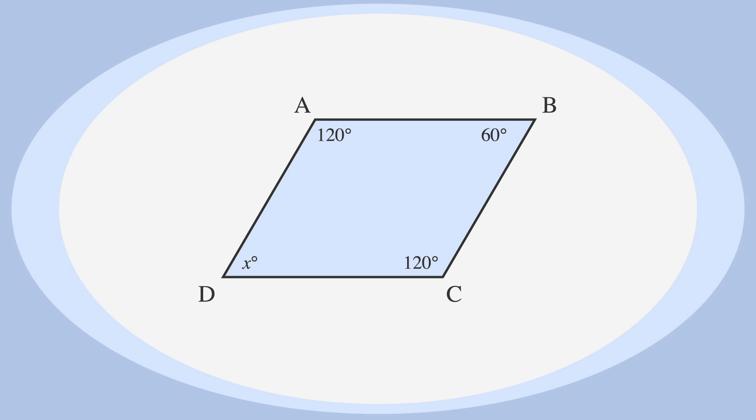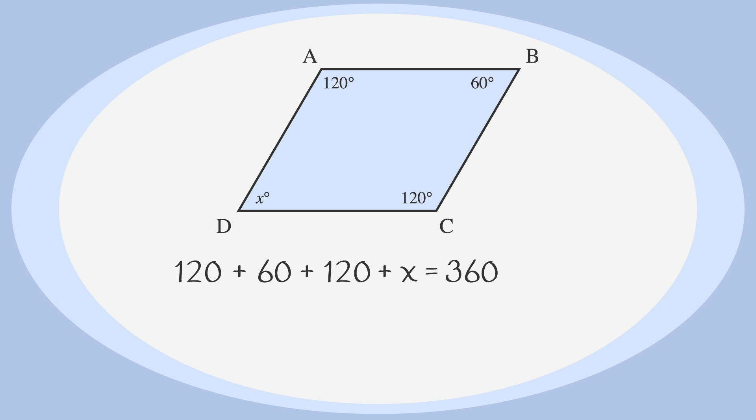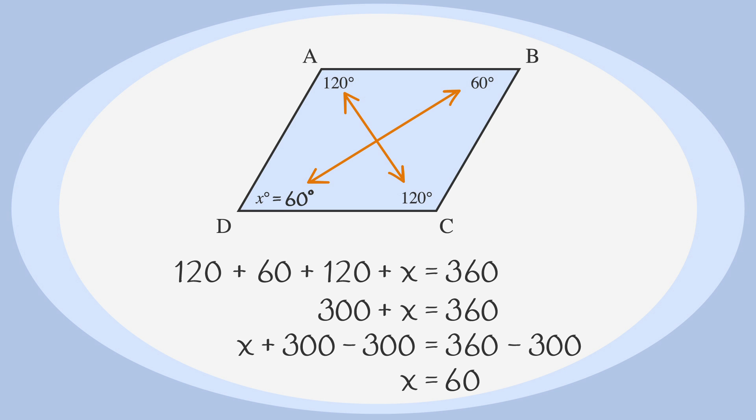Given the following parallelogram with the measure of three angles noted, we could solve for our missing angle. We want to set the sum of all the angles equal to 360. So, 120 plus 60 plus 120 plus x equals 360. After adding, we have x plus 300 equals 360. Subtracting 300 from both sides, we get x equals 60. So, our missing angle has a measure of 60 degrees. Did you notice that the angles across from each other on the parallelogram had the same degree measures? We'll get into that a bit later.